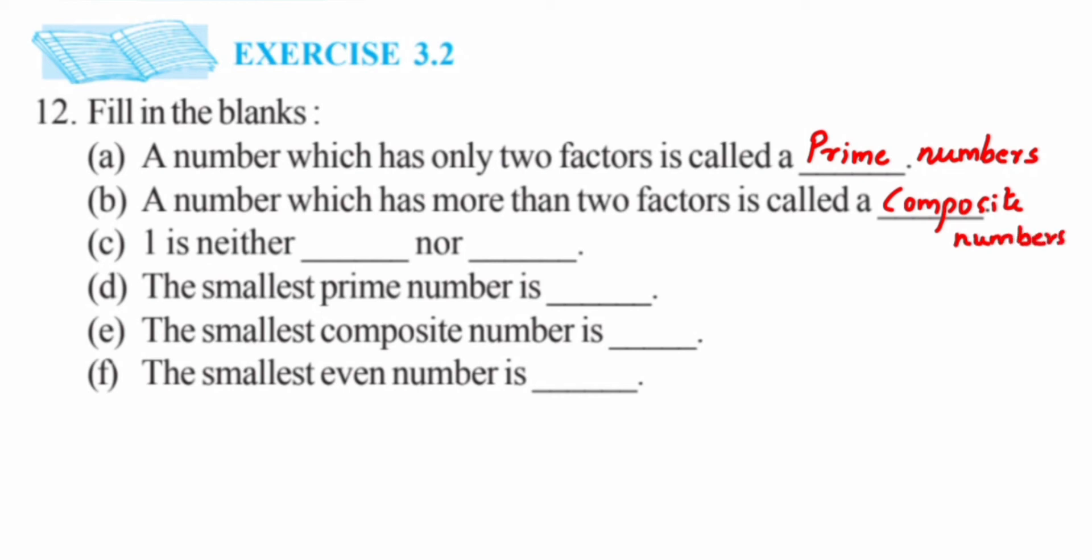Question (c): 1 is neither ___ nor ___. So 1 is neither prime nor composite number. The first blank gets prime and the second gets composite. It doesn't belong to prime numbers nor composite numbers.